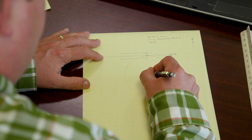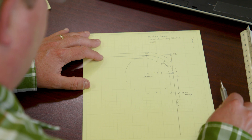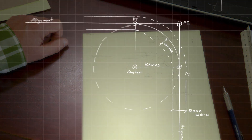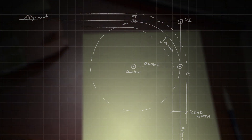Now that you know the spacing of the signs, plot them out around the curve, adjusting as needed to work around roadside objects. The spacing should be maintained, though sometimes the array has to shift a little. If we rotate them and get that gap even on each side from the PC to PT, that's a more equitable result.